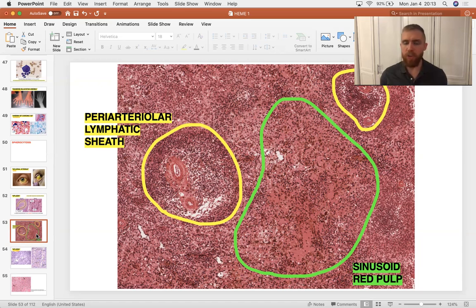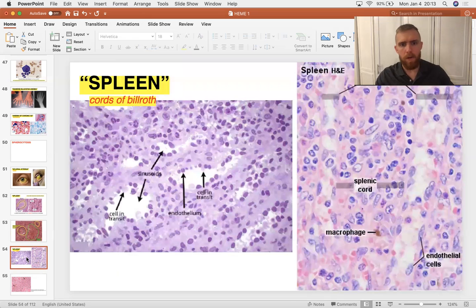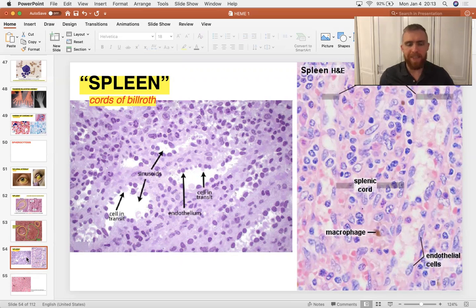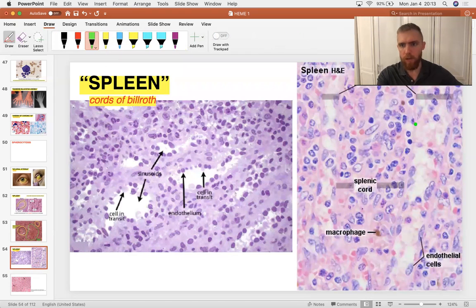Those are opsonins, which can stick on the membrane of a red blood cell. And when a macrophage sees it, it says, you're done for, buddy. And here's a closer look at the cords of Billroth. The spleen, again, is a sinusoid organ, like the liver. It means it's got these very tight spaces. And between these sinusoids are cords, consisting predominantly of macrophages, with some endothelial cells there as well.